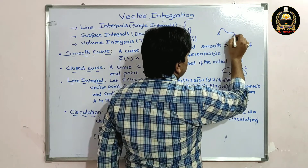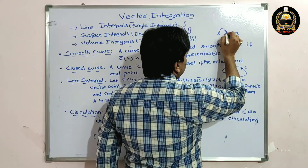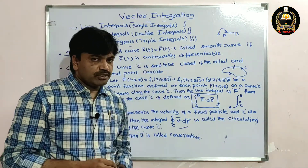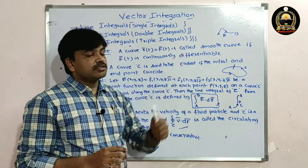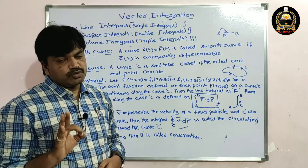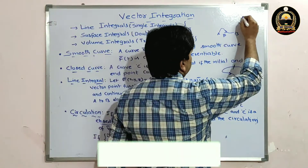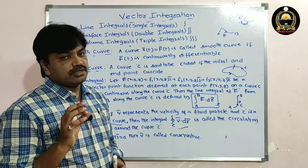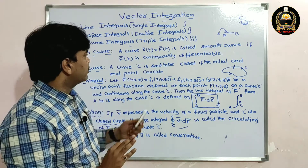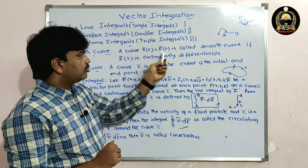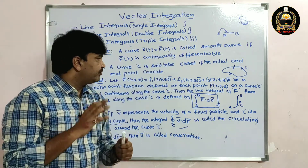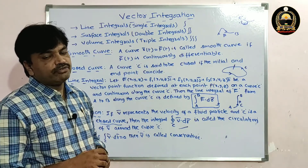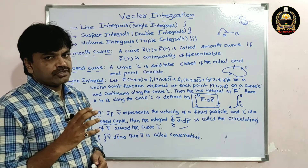Suppose there is a curve with initial point A and end point B. If f̄ is continuously differentiable along the curve, then such a curve is called a smooth curve. If the curve is zigzag, that is not a smooth curve. So a smooth curve r̄(t) = f̄(t) requires f̄(t) to be continuously differentiable.